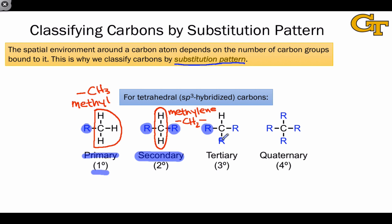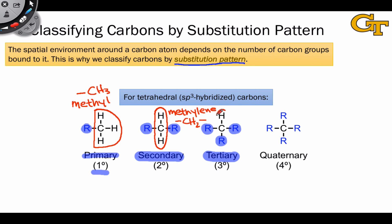A carbon with three R groups bound to it is referred to as tertiary, and we use this three-degree symbol to indicate the tertiary carbon. Once again, the carbon and its associated hydrogen has a specific name — we call this CH with three R groups bound to it a methine carbon. Finally, a carbon with four R groups around it, such that it has no hydrogens, is referred to as a quaternary carbon, and we use this four-degree symbol to indicate the quaternary carbon.